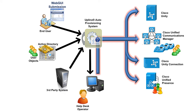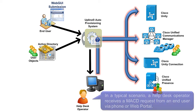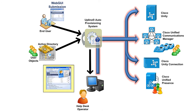Let's have a look at an example of the workflow. In a typical scenario, a Help Desk operator receives a MACD request from an end user via phone or web portal. The Help Desk operator uses the Uplink's console to action the MACD via the provisioning system. Through the console, the operator selects the requested action, the location, and the user to quickly pre-populate all fields. A typical provisioning job can be performed in 30 seconds or less, and all steps are logged in an extensive reporting system.